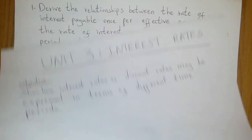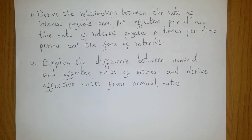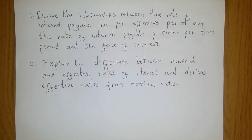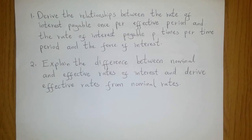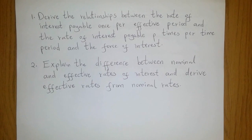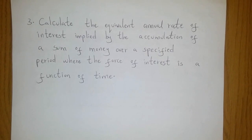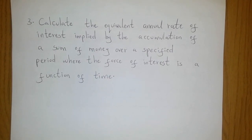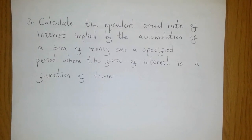In particular, we will look at how to derive the relationships between the rate of interest payable once per effective period, the rate of interest payable p times per time period, and the force of interest. We will explain the difference between nominal and effective rates of interest and derive effective rates from nominal rates. Finally, we will calculate the equivalent annual rate of interest implied by the accumulation of a sum of money over a specified period where the force of interest is a function of time.